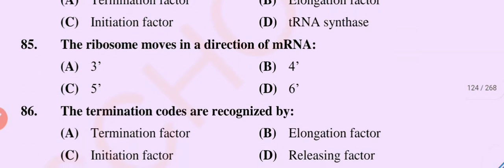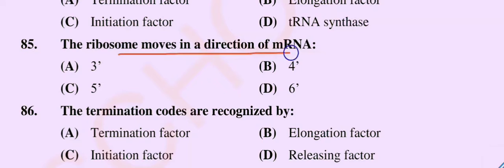Question number 85. The ribosome moves in which direction on messenger RNA? Option A, 3'; option B, 4; option C, 5; option D, 6. The correct option is option A, 3'.